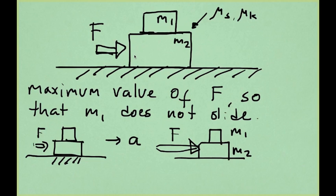It is only when the force applied to M2 is very large — larger than a certain value — that M1 would slide. Imagine hitting M2 hard with a hammer: M2 moves quickly from under M1, and M1 stays in place. This is similar to the tablecloth trick — if you pull fast enough, M1 cannot keep up. With a large force F, M2 moves so fast that M1, connected only by friction, cannot follow.